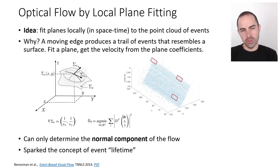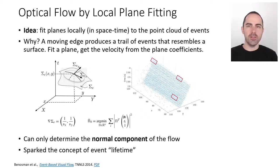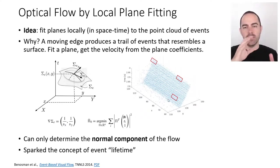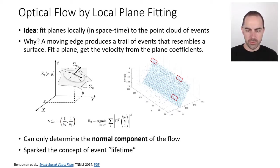This algorithm is one of the earliest that processes events directly rather than adapting frame-based vision methods. It also sparked the concept of event lifetime — the time an edge takes to traverse one pixel. What's interesting is that there are no two frames being analyzed; instead, the point cloud of events is analyzed in space-time geometry, and as every event comes in, a small space-time neighborhood around it is used to fit the plane. It's quite different from frame-based approaches.